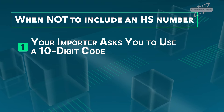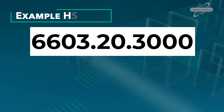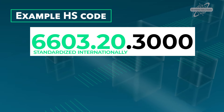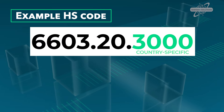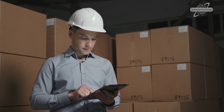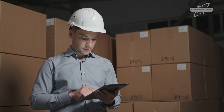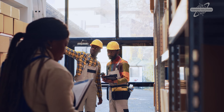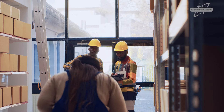Reason number one: your importer asks you to use a 10-digit code. The first six digits of the HS code are standardized internationally, but the remaining digits are country-specific. So the 10-digit HS number you use for US export purposes probably differs from the 10-digit number that your importer needs in their country.